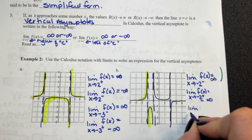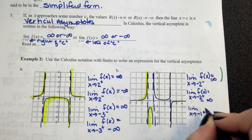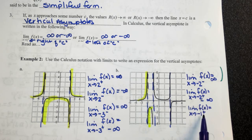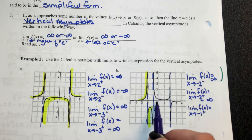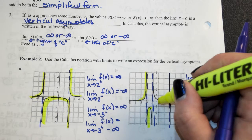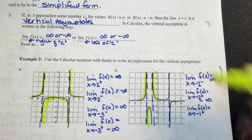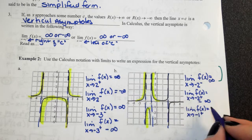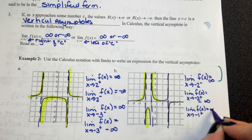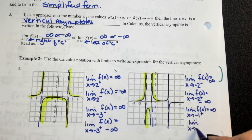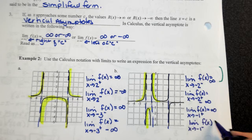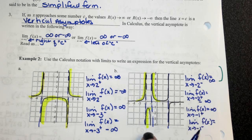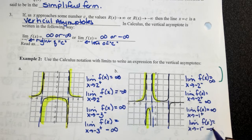Look at the limit as x approaches negative 1 from the right — negative 1 is your vertical asymptote, the plus means we look to the right-hand side. As you're getting closer and closer to negative 1 from the right, we're going towards infinity. The limit as x approaches negative 1 from the left — to the left of negative 1 the graph is going down, towards negative infinity.